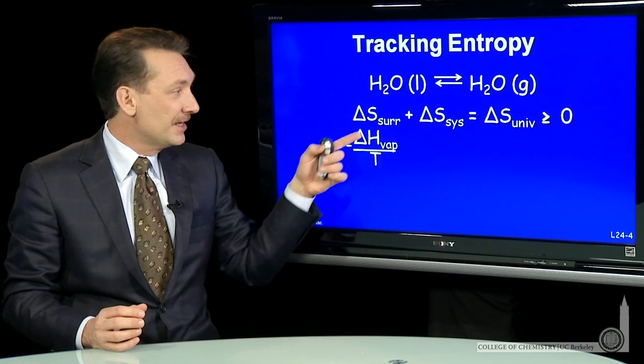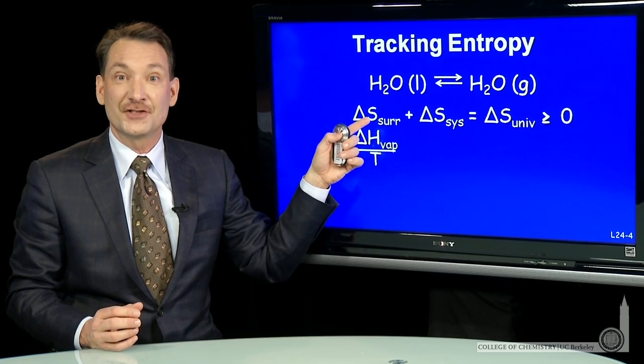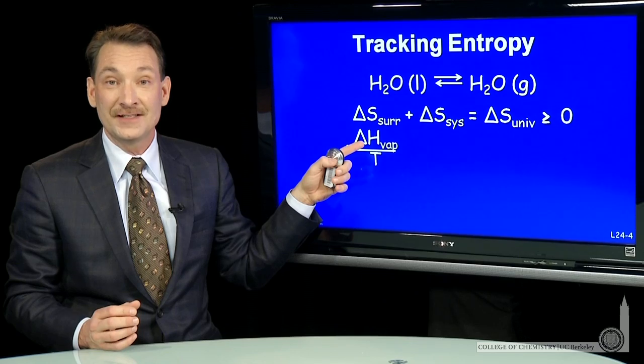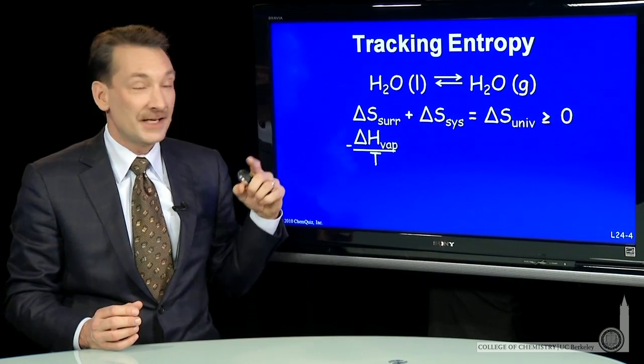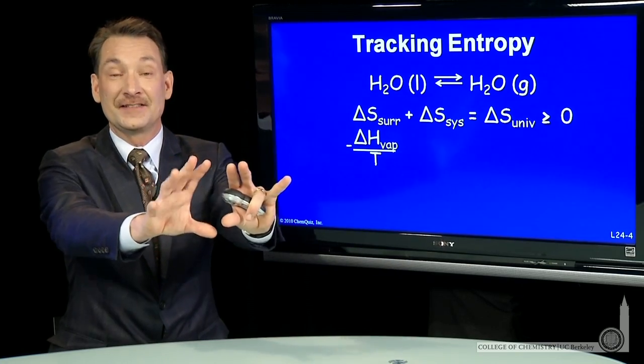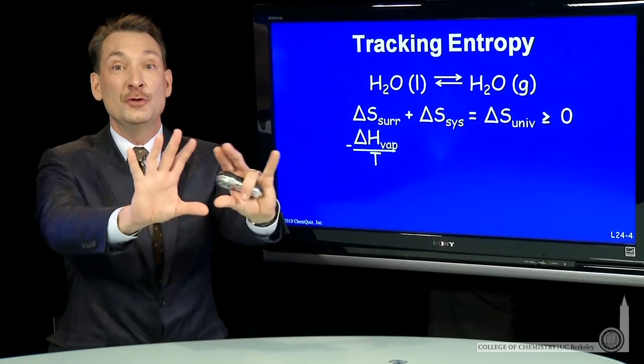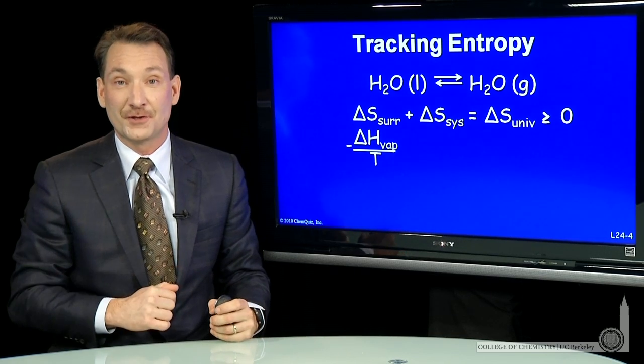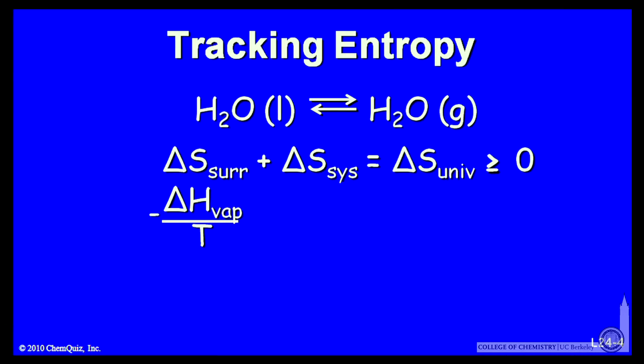So I can write this entropy change of the surroundings in terms of the enthalpy change in the system. And I'm going to give it a negative sign because it's the surroundings that's sending heat into the system. So the surroundings is losing heat. It's exothermic from the position of the surroundings. I add that to the system entropy, and I get the entropy of the universe. So now I'm in terms of system variables.